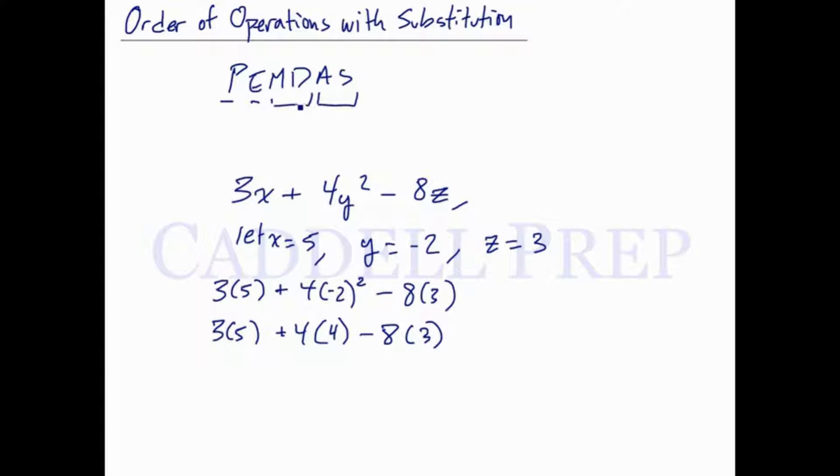Now we can do multiplication and division. We just have multiplication, so multiply each of these individual terms. 3 times 5 is 15. 4 times 4 is 16. Let's take this minus sign with 8 and call it negative 8. Negative 8 times 3 is negative 24.